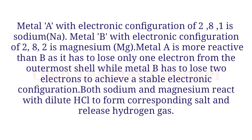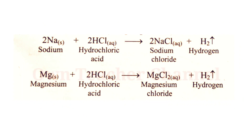Both sodium and magnesium react with dilute hydrochloric acid to form the corresponding salt and release hydrogen gas. Sodium plus dilute hydrochloric acid gives sodium chloride and hydrogen gas. Magnesium with hydrochloric acid gives magnesium chloride and hydrogen gas.